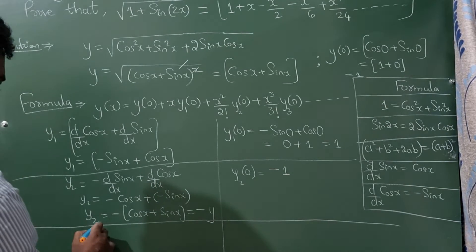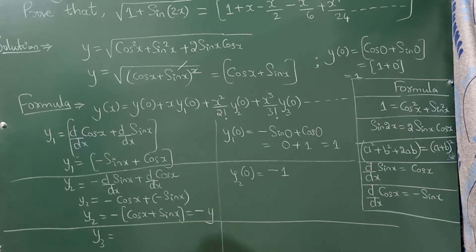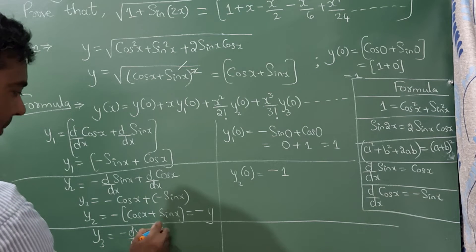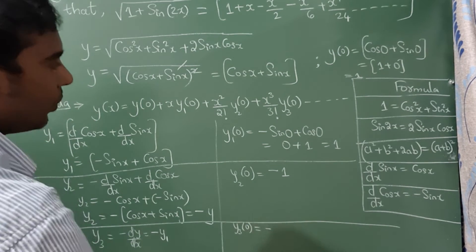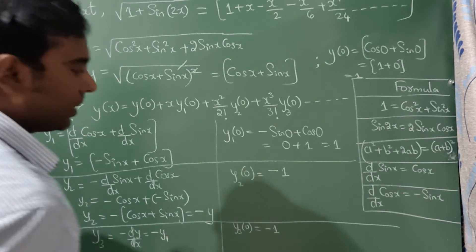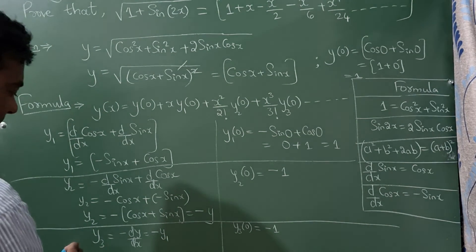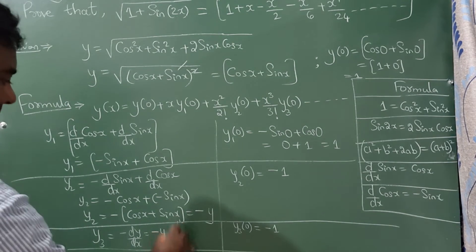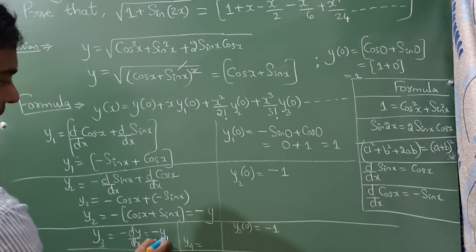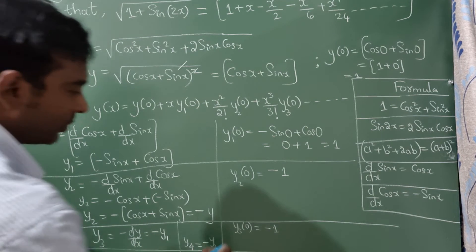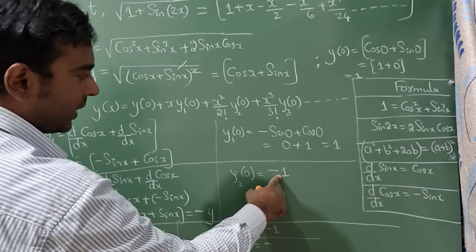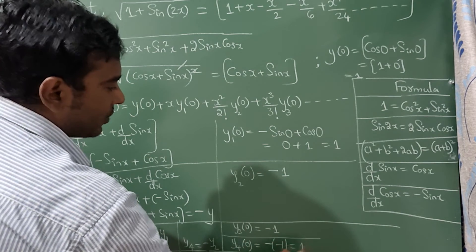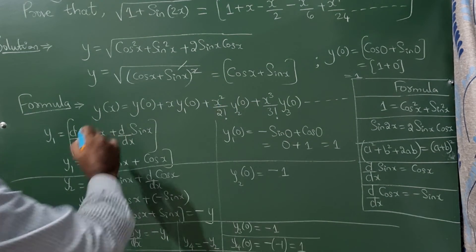Differentiating again: y₃ = −y₁, so y₃(0) = −y₁(0) = −1. For y₄, differentiating gives y₄ = −y₂, so y₄(0) = −y₂(0) = −(−1) = +1.